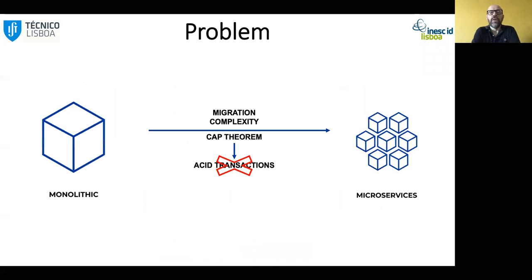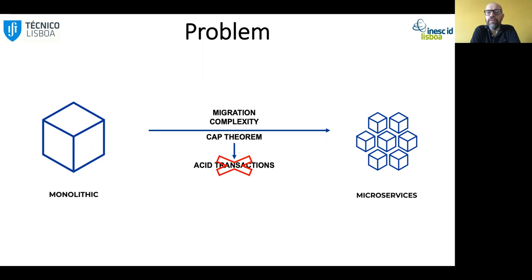First of all, I'm going to give you a little bit of context on the problem we have been addressing in our research group for a while. We look at the problem related with the migration of a monolith to a microservice architecture, specifically the identification of which microservices, with our focus being on the complexity of the migration.